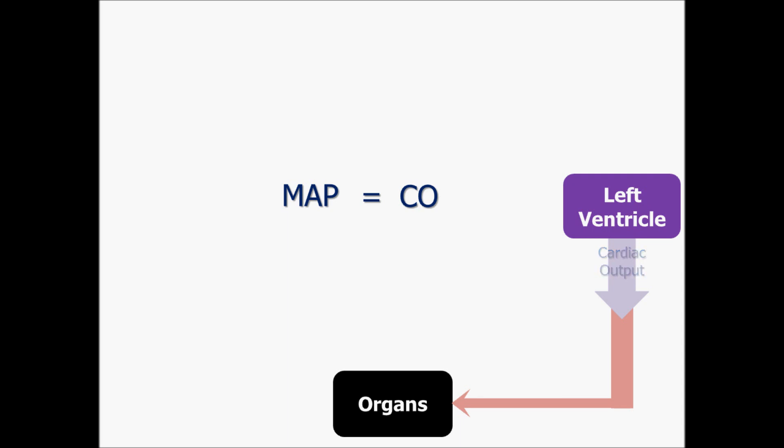The second component of MAP has to do with the blood vessels. Remember that the blood vessels have to squeeze down in order to keep blood flowing through the system even when the heart is at rest. And that squeezing, that tension, produces a resistance that's called systemic vascular resistance, or SVR.